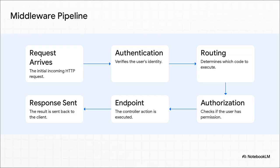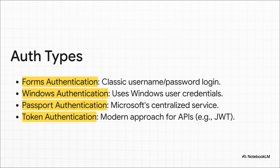One of the coolest concepts in ASP.NET Core is the middleware pipeline. The best way to picture it is like an assembly line. When a request comes into your application, it has to pass through each piece of middleware in a specific order. Each one does something to it — checks for authentication, figures out routing, checks authorization — before it finally hits your code and a response is sent back down the line. A really key step in that pipeline is authentication, proving a user is who they claim to be. You should be familiar with common ways to do this, from older methods like Forms and Windows authentication, to more modern API-focused approaches like token authentication using JWTs, or JSON Web Tokens.